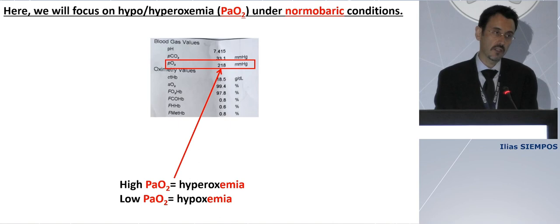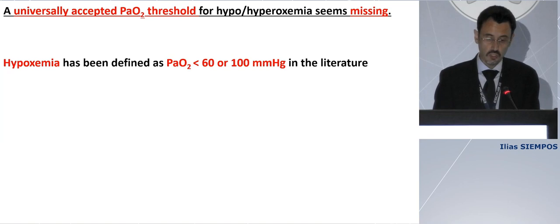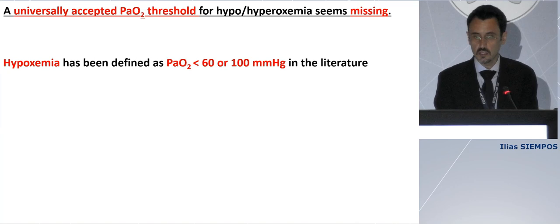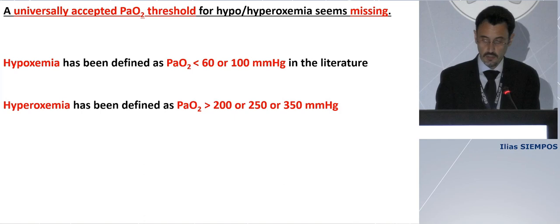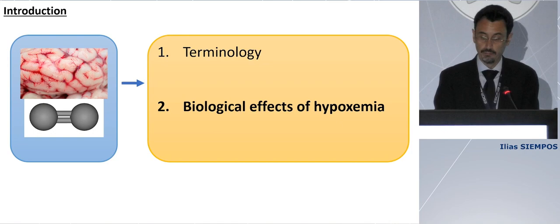There are several trials exploring the effect of hyperbaric oxygen on outcomes of patients with severe TBI, but reviewing these trials is beyond the scope of this presentation. A first observation from the literature is that the universally accepted PaO2 threshold for hypo- or hyperoxemia seems missing. Hypoxemia has been defined as PaO2 less than 60 — the traditional definition — or even less than 100 mmHg. Likewise, hyperoxemia has been defined as PaO2 above 200, 250, or even 350. So there is variability in terminology.